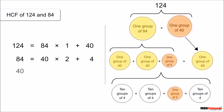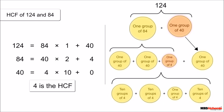Out of 40, ten groups of 4 are made: 40 = 4 × 10 + 0. This implies 4 is the biggest number which divides both 84 and 124. Thus, 4 is the HCF of 124 and 84.